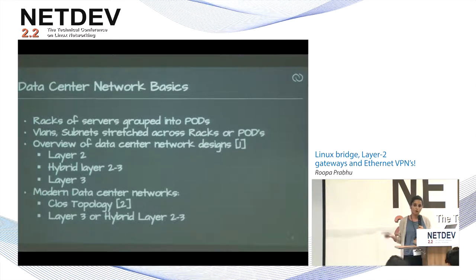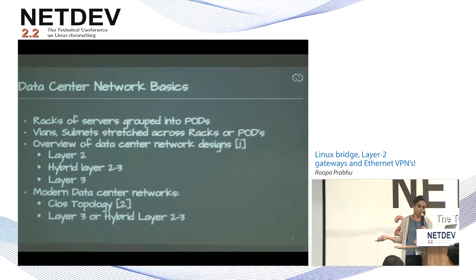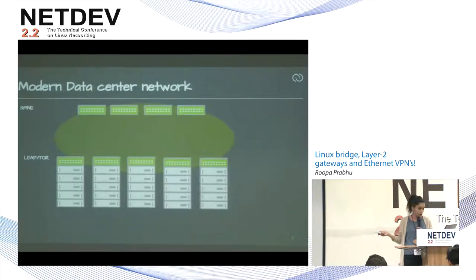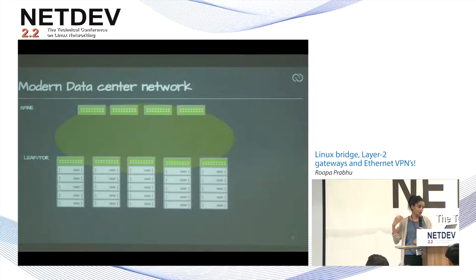Everybody wants to move to layer three because layer two networks with STP loops are not very interesting anymore. Modern data center networks use the clos topology, usually layer three or hybrid networks. Racks of servers are connected by top-of-the-rack switches, also called leaf switches, and you can have another tier of switches in between, but this is the simplest flat, folded clos topology. Leaf switches or TOR switches are not connected to each other — they all go through the spine.